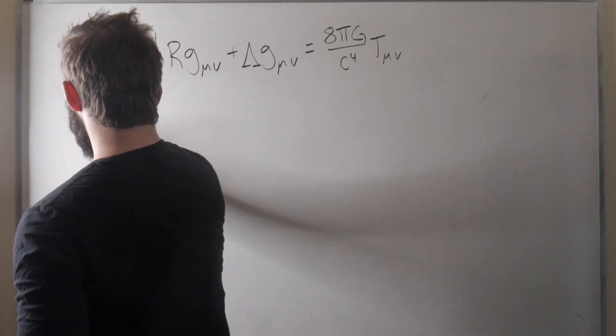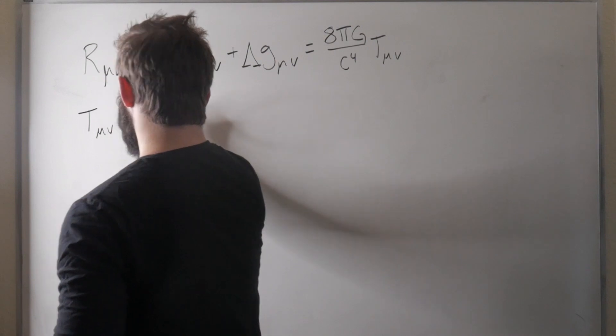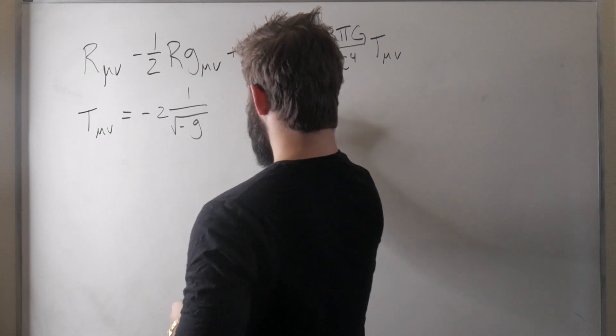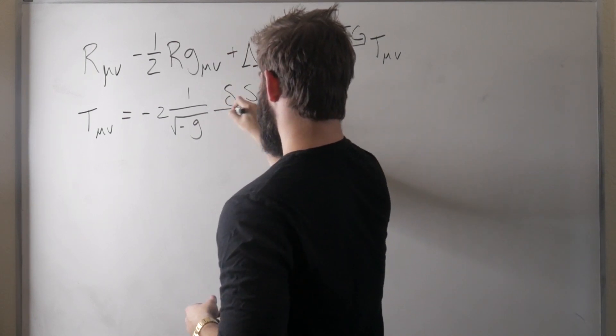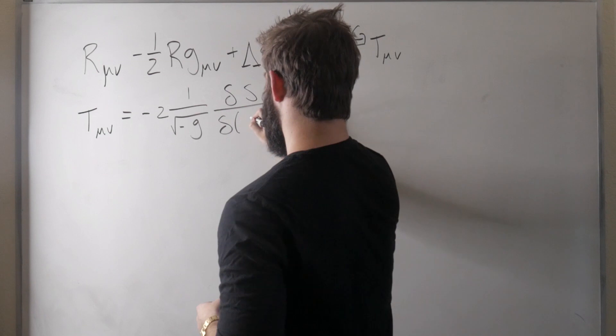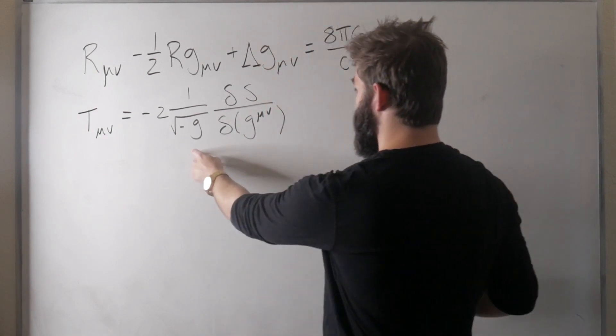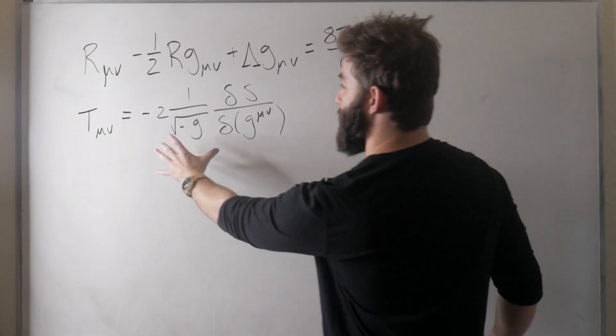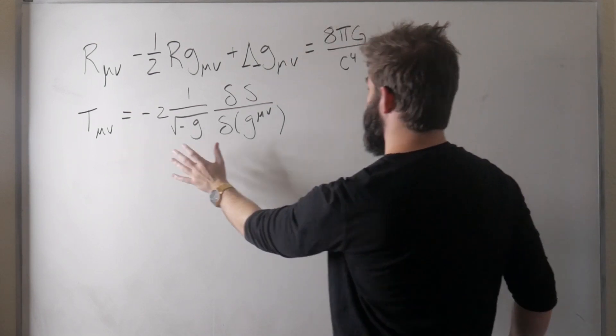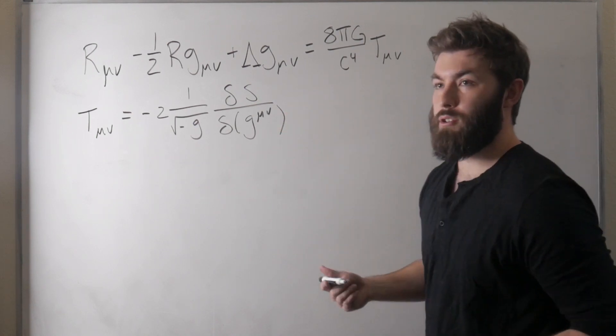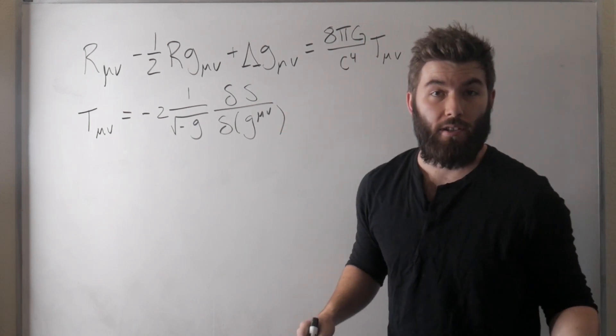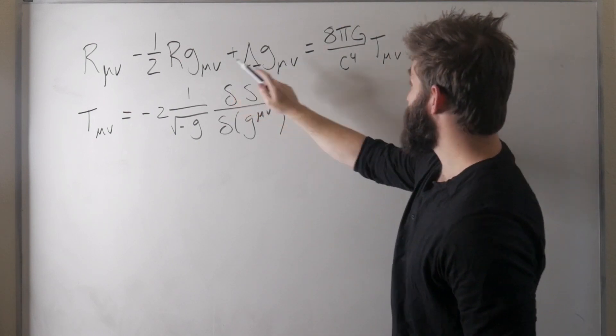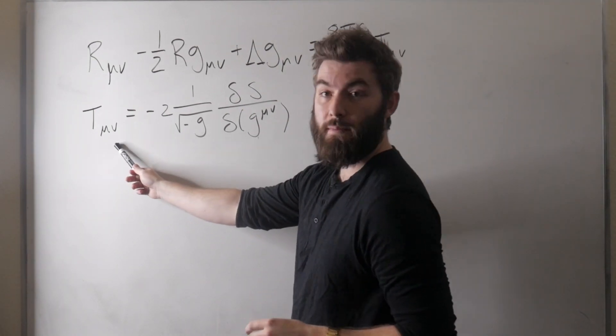Now the energy momentum tensor is defined T mu nu equals minus two one over root minus g and then it's a functional derivative of the action with respect to the metric where the g without the index corresponds to the determinant of the metric. Okay so this is how you actually define the energy momentum tensor and now that you know all of this you can finally understand the famous expression that says matter tells space time how to curve and curved space time tells matter how to move.